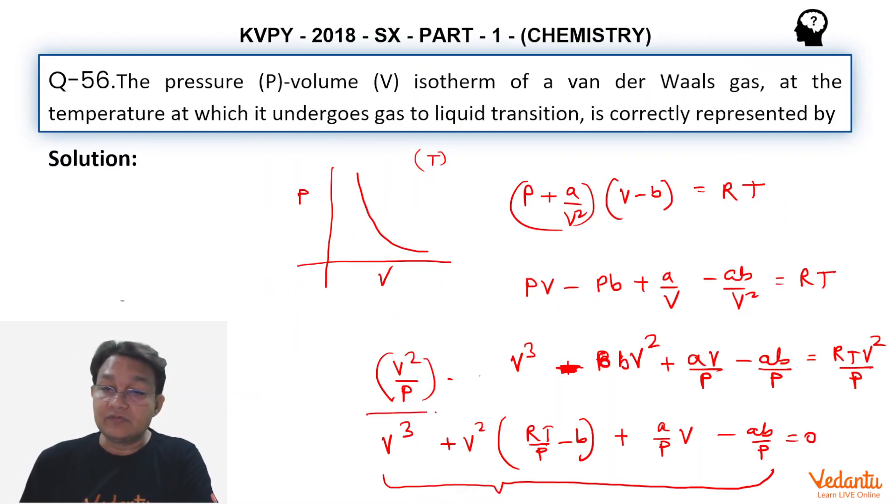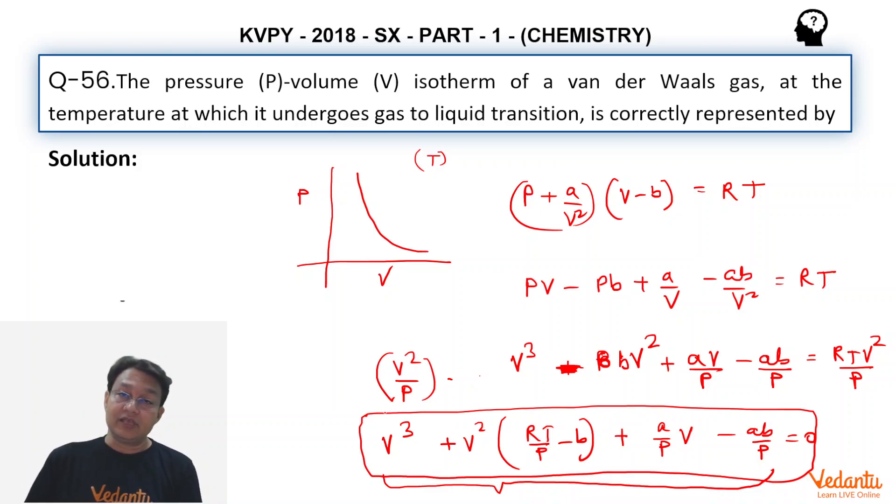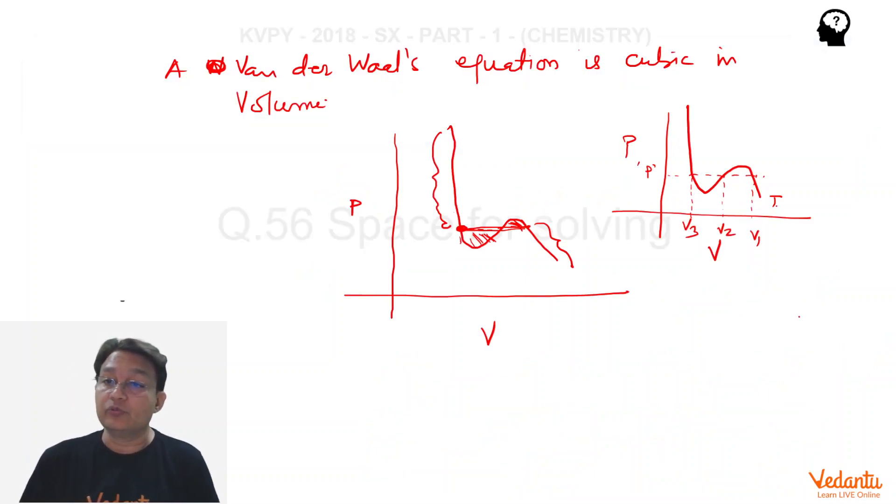So this is the justification that a Van der Waals equation is cubic in V and that is why for every pressure and for a given pressure and temperature we could have three volumes. So that is the shape of a cubic equation.